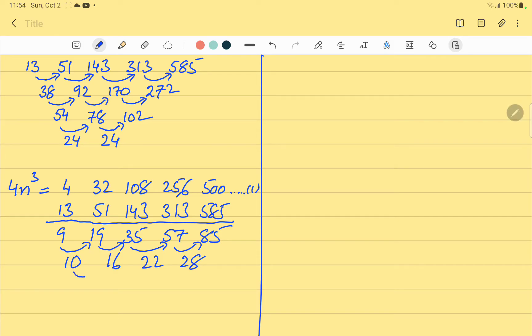By finding it one more time, we see that 16 minus 10 is 6, 22 minus 16 is again 6, and 22 when we subtract it from 28, it is 6.